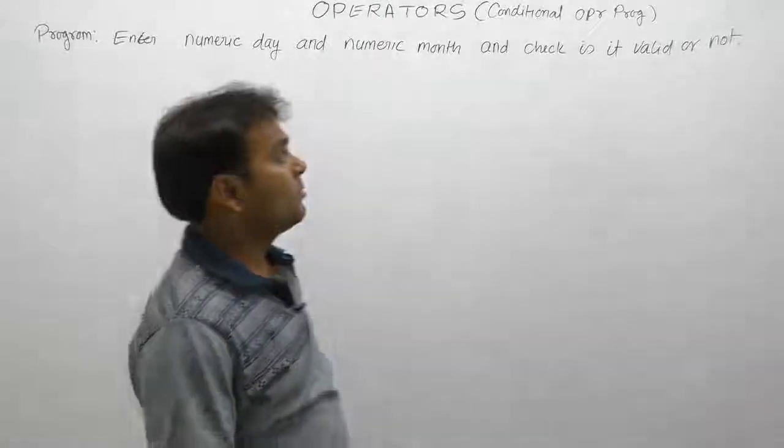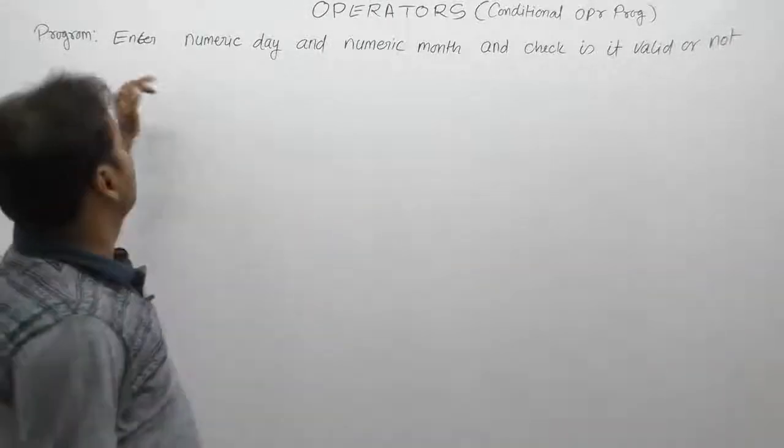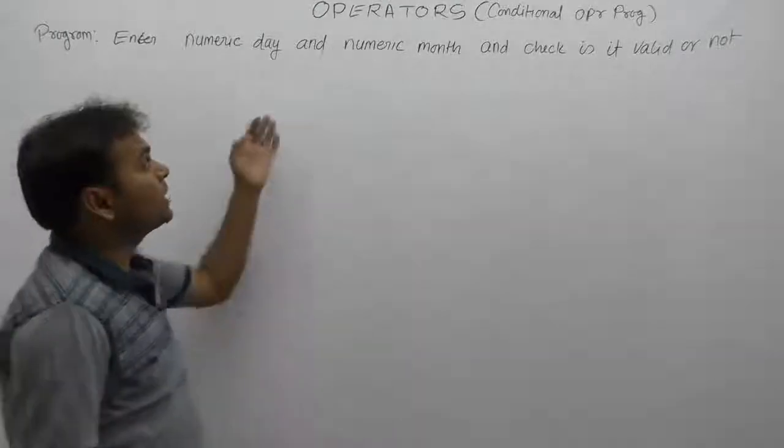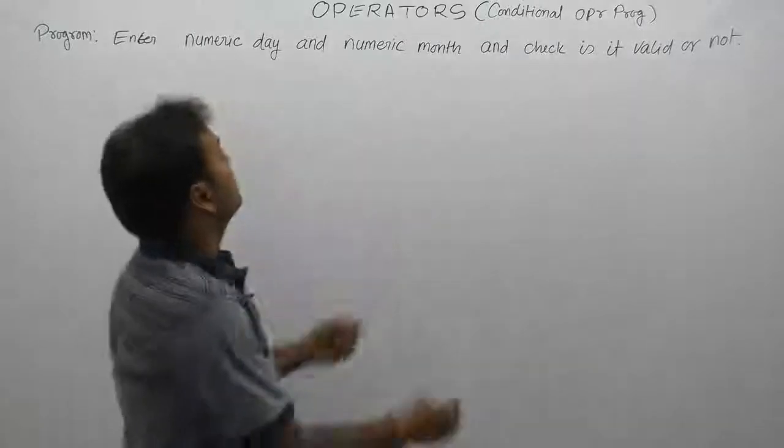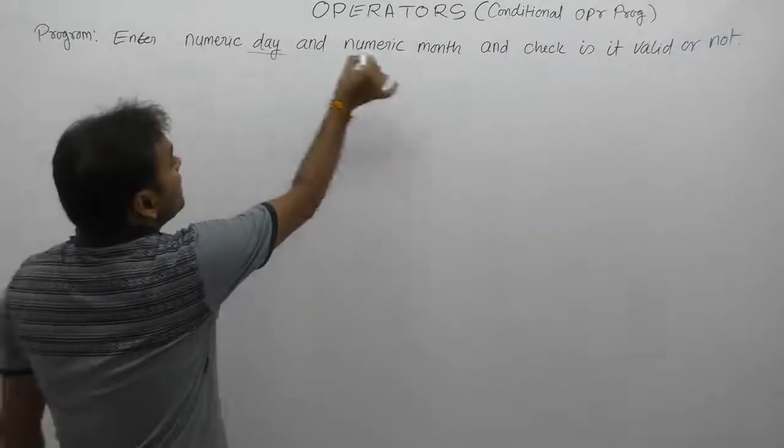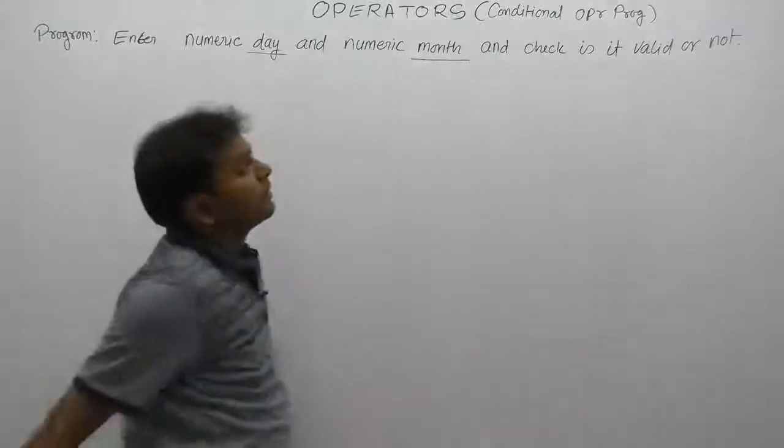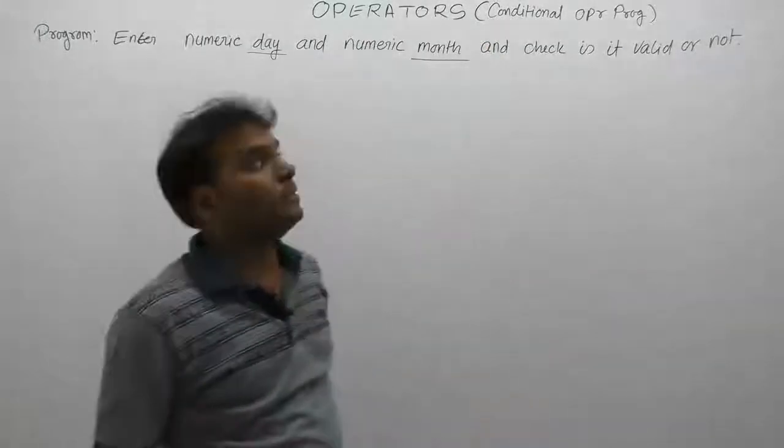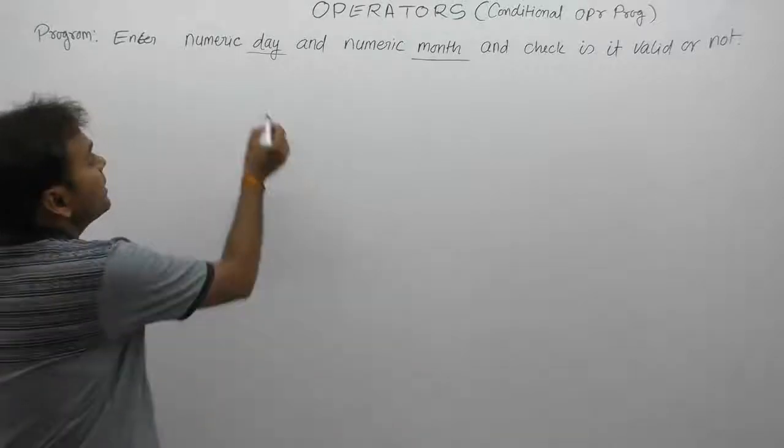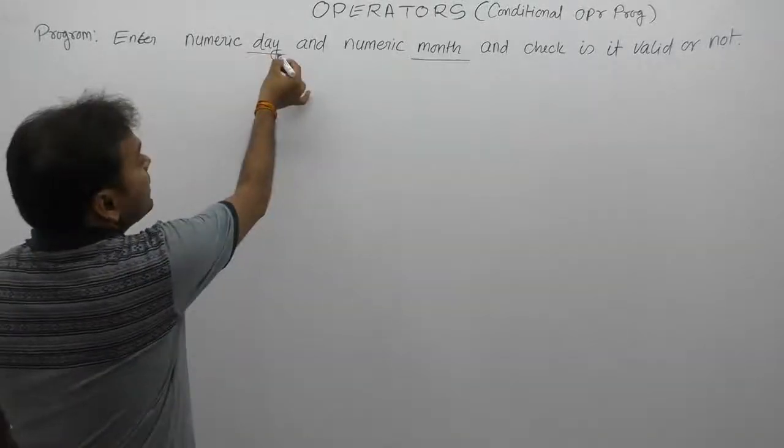Next, we have another similar problem. Read this example: enter numeric day and numeric month. How many inputs are required here? Day and month. We need to check if it is valid or not. In this case, we enter day and month in numeric format.